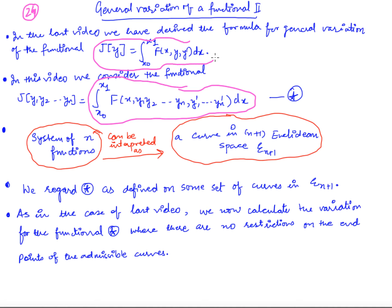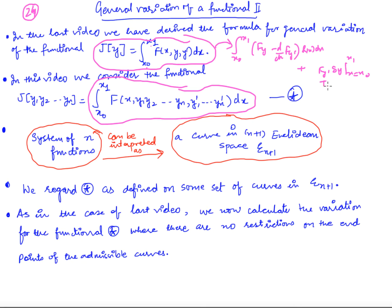What do we mean by general variation? General variation means there are no constraints on the endpoints — y at x0 and y at x1 can freely move. We have seen in the last video that general variation for this particular functional is: the integral from x0 to x1 of (fy minus d/dx of fy_dash) times h(x) dx plus fy_dash times delta_y evaluated at x0 to x1, plus (f minus y_dash times fy_dash) times delta_x from x0 to x1.